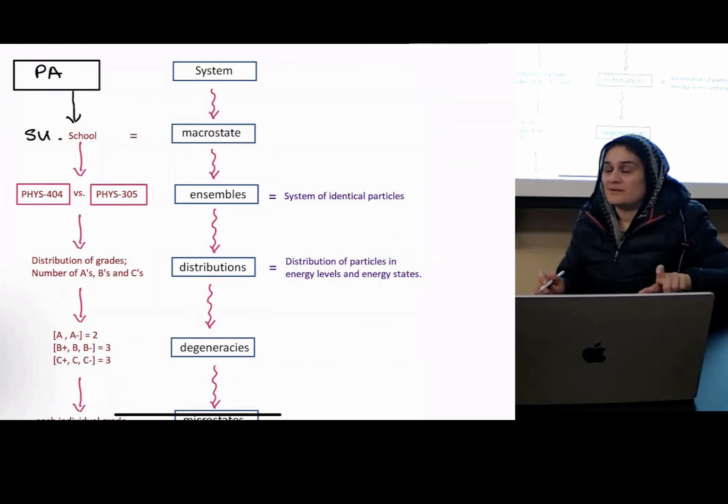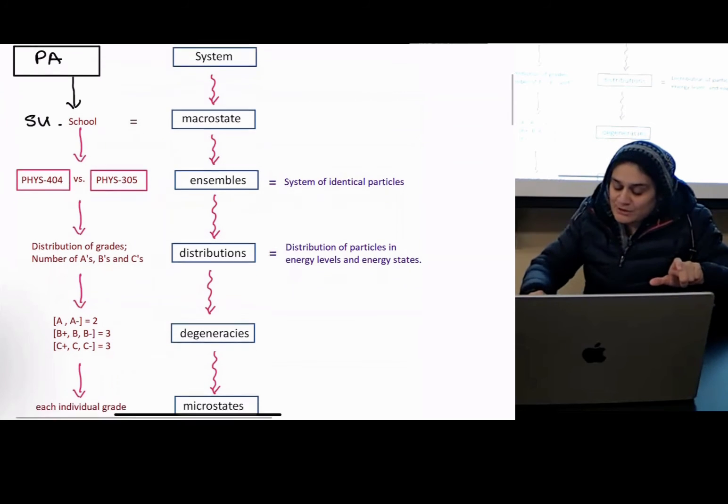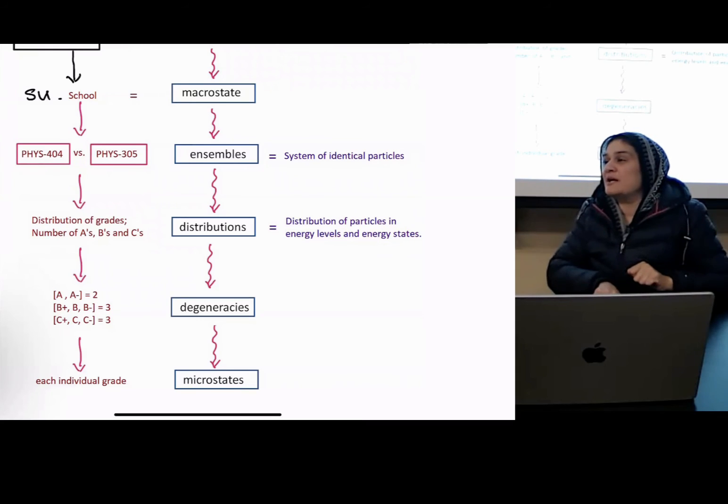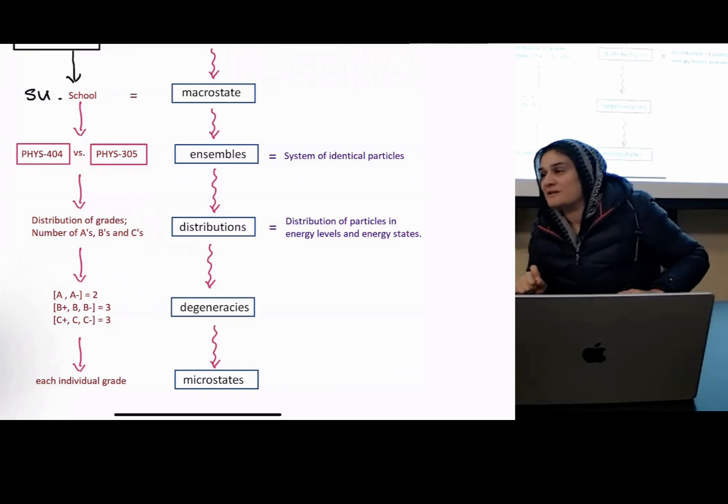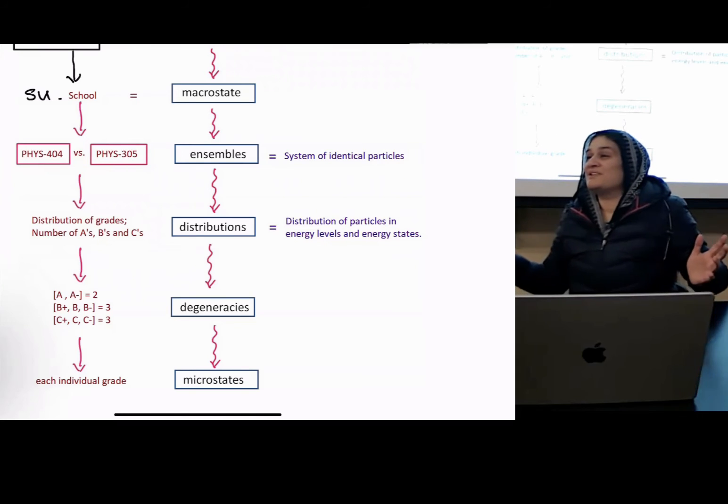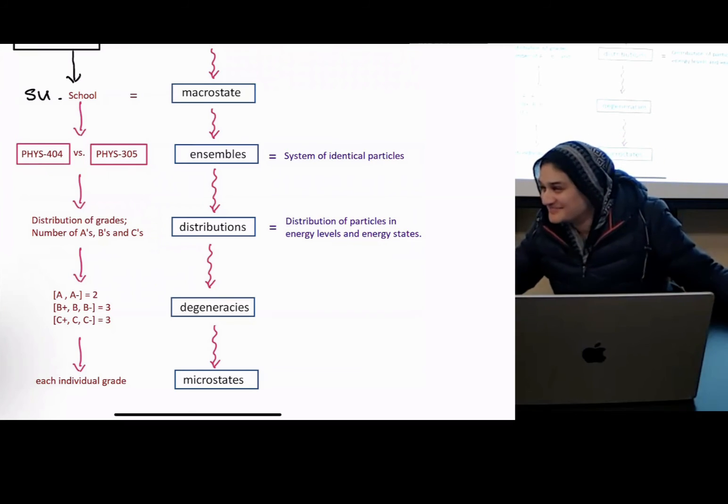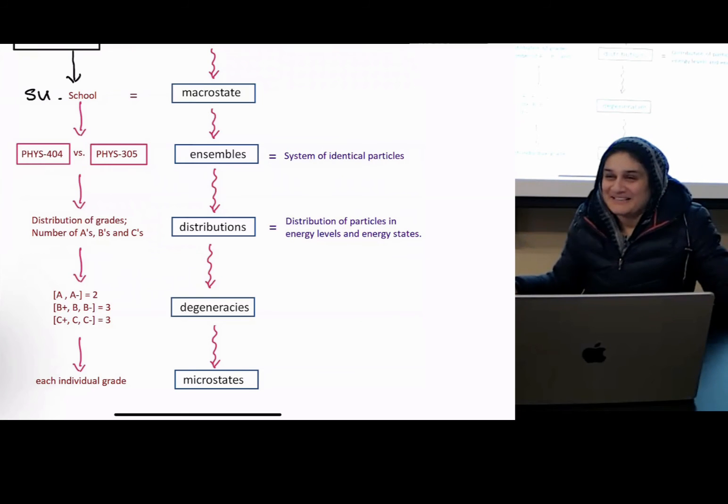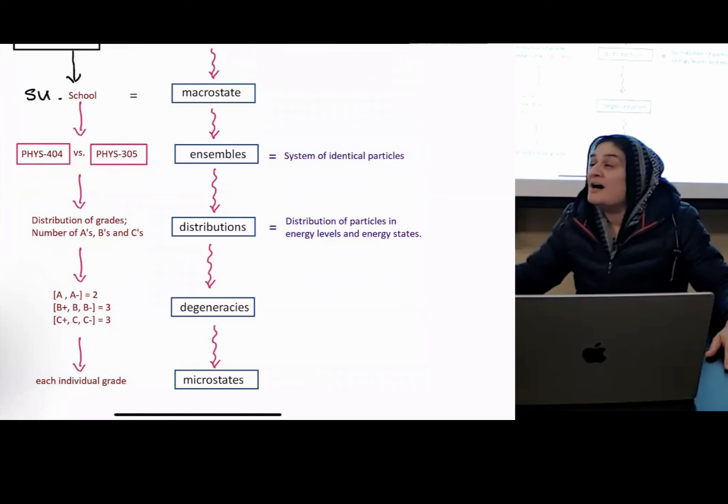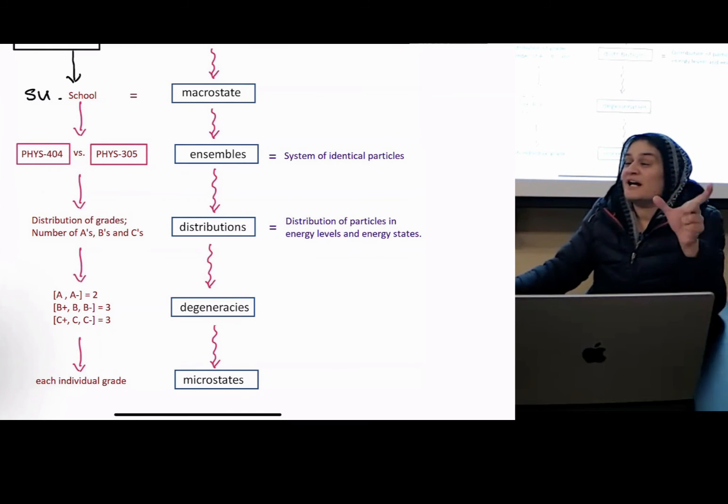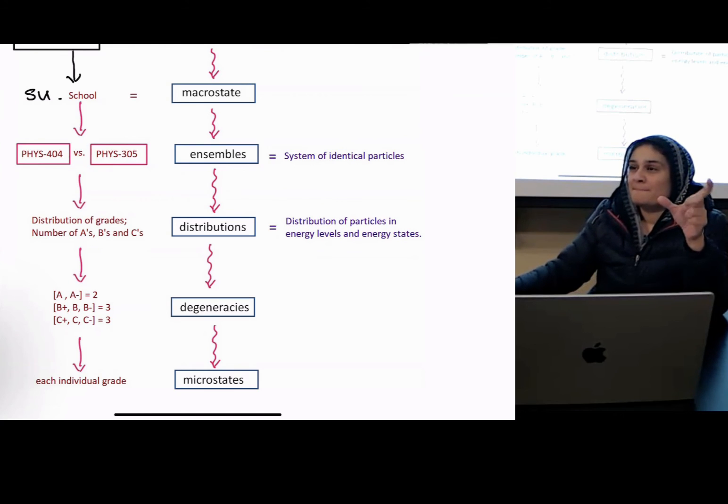Then what is the degeneracy? The degeneracy is how many types of A's do you get, how many types of B's, C's, D's, and F's? What is the degeneracy of an F? It's either an F or not an F. Can you get an F minus? Can you be failing that badly? Can you get an F plus? You're failing. So an F is a non-degenerate state. But you can get A's, right? How many different kinds of A's could you get at SU? Three. Two.